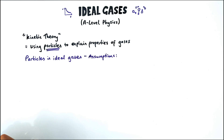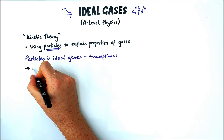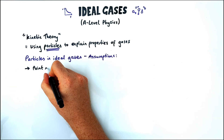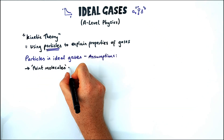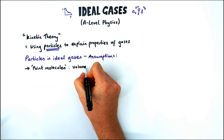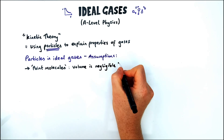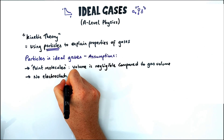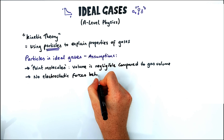This leads us on to our assumptions behind gas particles. The first assumption is that the particles themselves are infinitesimally small — they have a negligible volume compared to the volume of the total gas or the container they're in. Sometimes that's called point molecules: the volume is negligible compared to the container.